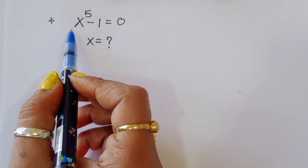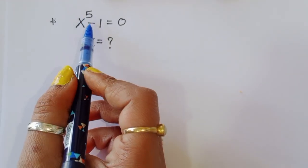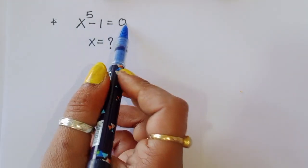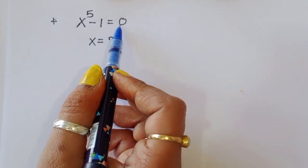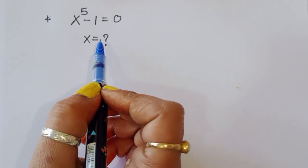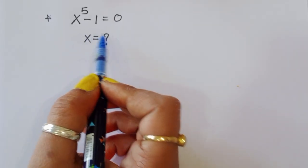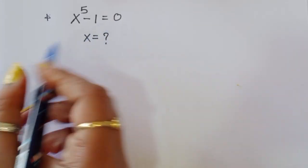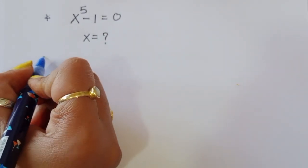The question is: given x power 5 minus 1 is equal to 0, we have to find out the value of x. Let's see the solution.